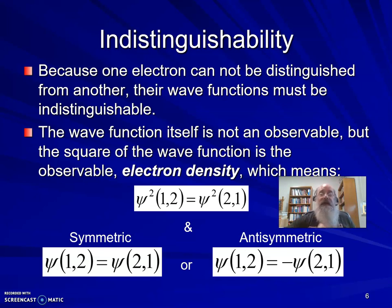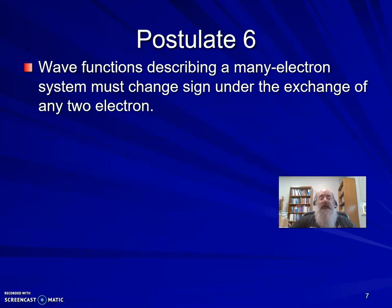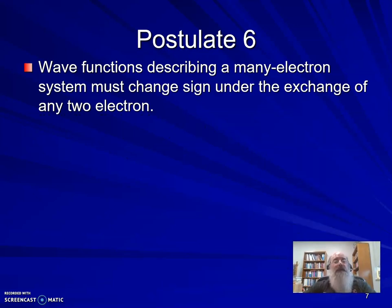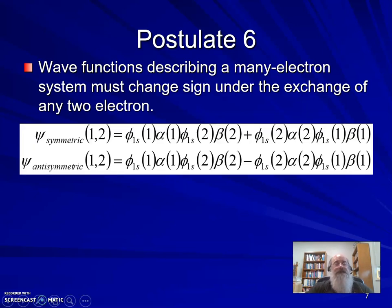And that leaves us to our final postulate. We've dealt all semester long with five postulates of quantum mechanics. The sixth postulate is the Pauli exclusion principle, which we're going to put into math terms here in a moment. Wave functions describing a many-electron system must change sign under the exchange of any two electrons. So the symmetric case would look like this. The antisymmetric case would look like this.